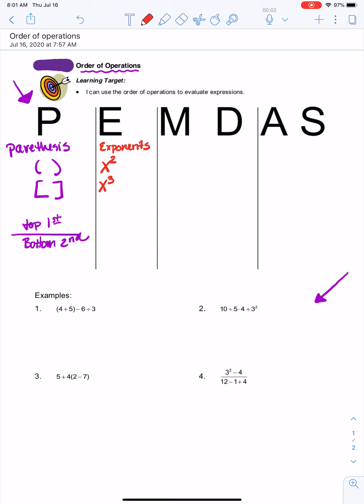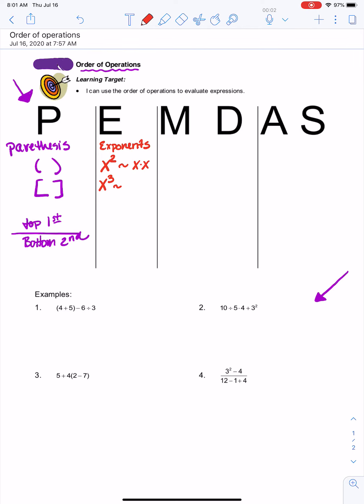Now it's important to remember that X squared doesn't mean the number times two. It means X times X, or X two times. Similarly, X to the third power means X times X times X.